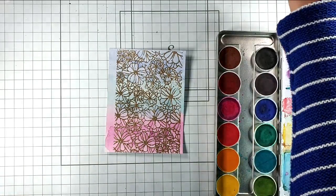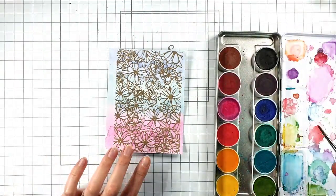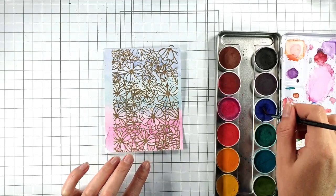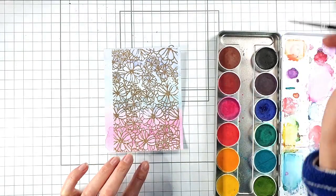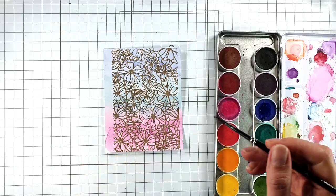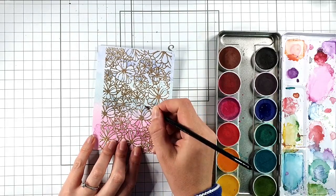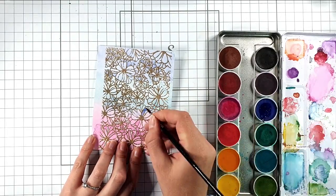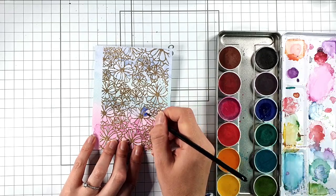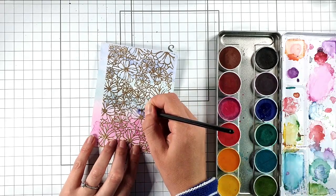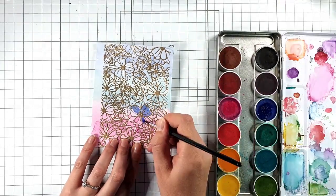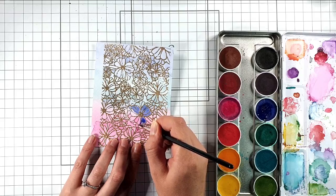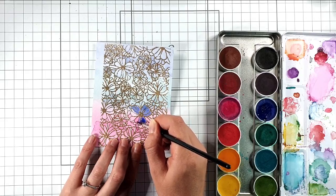Now that that initial layer has dried, I'm going to go back in with the same colors and just add a deeper level of watercolor to those flowers. I'm just using a stronger amount of the same colors. I'm still doing it in quite a loose way, there's nothing technical to what I'm doing.